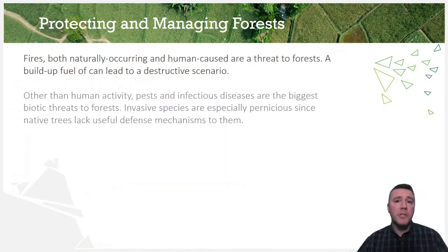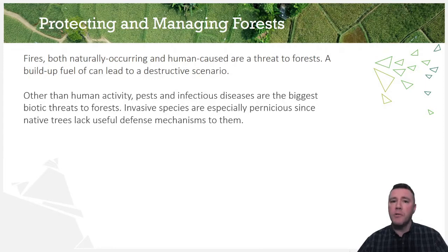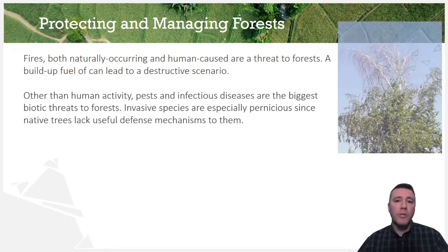Pests and infectious diseases are the biggest biotic threats to forests, outside of humans. Invasive species are especially pernicious since trees and other species of plant don't have any defense mechanisms with which to protect themselves. Chestnut blight, caused by a fungal infection, is estimated to have killed approximately 4 billion trees in the United States and Europe in just under a century. The bronze birch borer is an insect that damages the internal transport network for water and nutrients in birch trees, ultimately killing them.